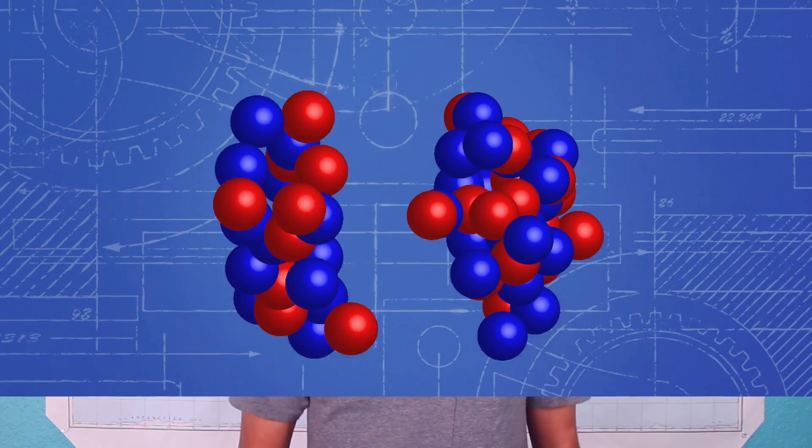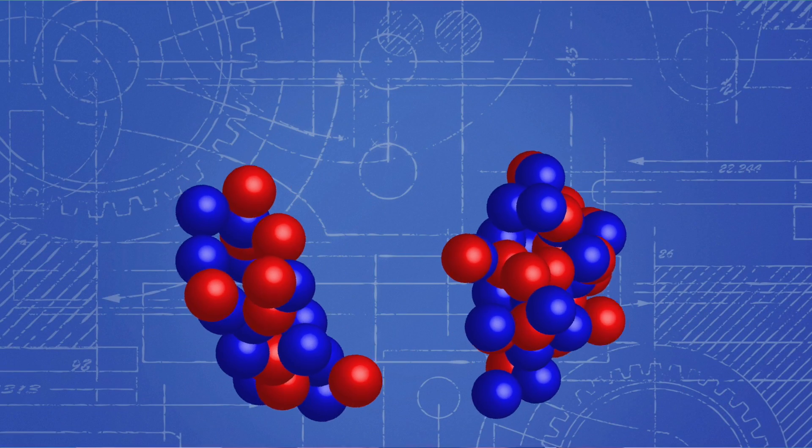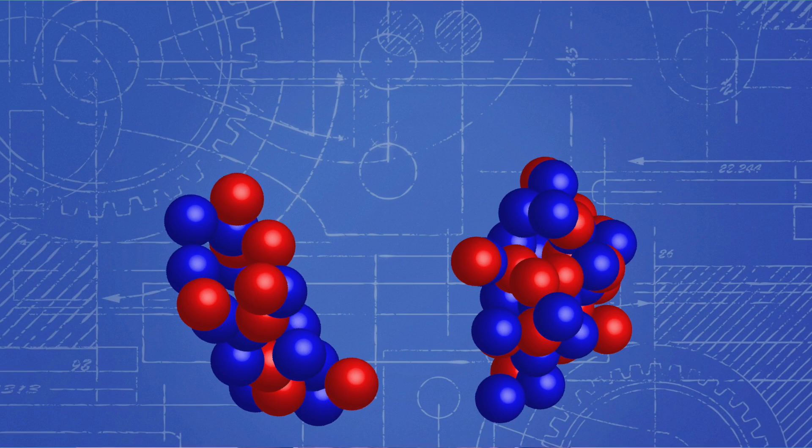Hey guys, today we're going to learn about nuclear fission. Simply put, nuclear fission happens when the nucleus of an atom splits apart into smaller pieces. Some isotopes of atoms are not stable, meaning their nuclei will spontaneously break apart.